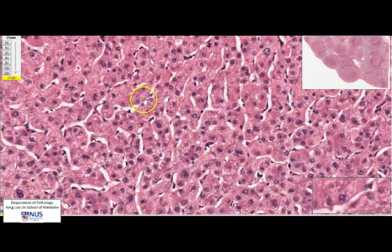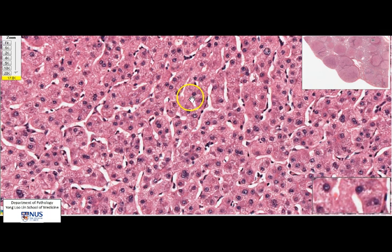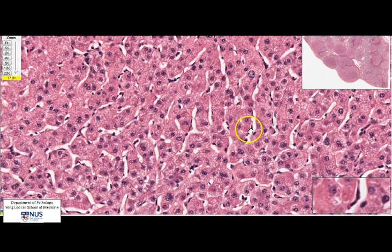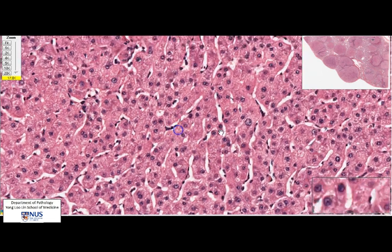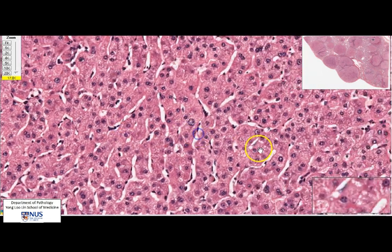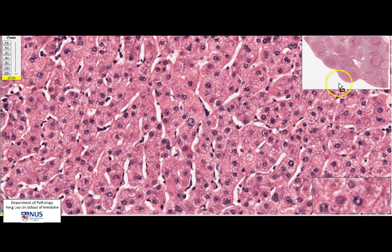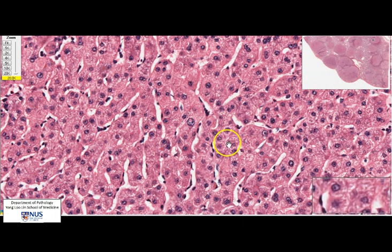These would be the sinusoids, and these are the hepatocytes. Some of these cells would be Kupffer cells, which are macrophages. The hepatocytes themselves don't look too abnormal, so this is more something that we appreciate on low power rather than at high power view.